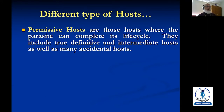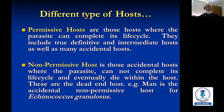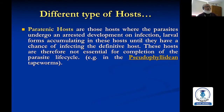Permissive hosts are where the parasite can complete its life cycle; they include definitive, intermediate, and many accidental hosts. Non-permissive hosts are accidental hosts where the parasite cannot complete its life cycle and eventually dies within the host — these are dead-end hosts. Man is the accidental non-permissive host for Echinococcus granulosus. Paratonic hosts are where the parasite undergoes arrested development, with larval forms accumulating until they have a chance of infecting the definitive host; these hosts are not essential for completion of the parasitic life cycle.